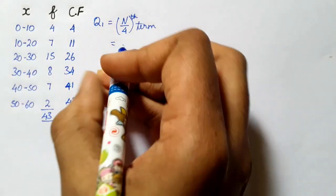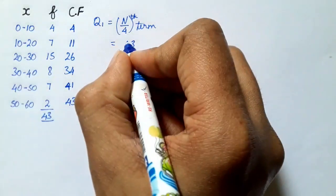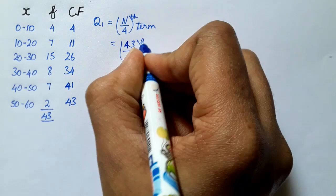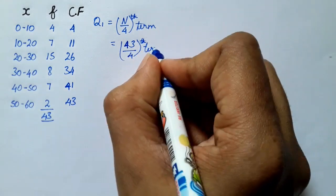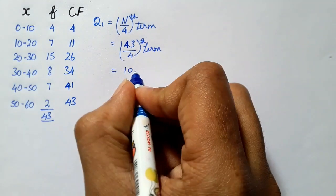Next, we calculate quartile 1. Using the starting formula, substitute n by 4. The n value total is 43, divided by 4, which gives 10.75. So the Q1 term is 10.75.